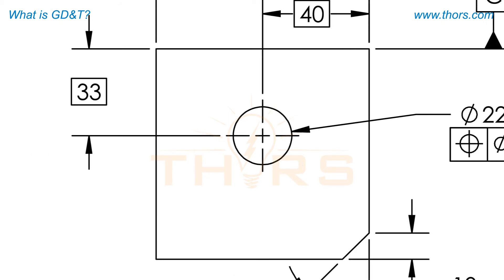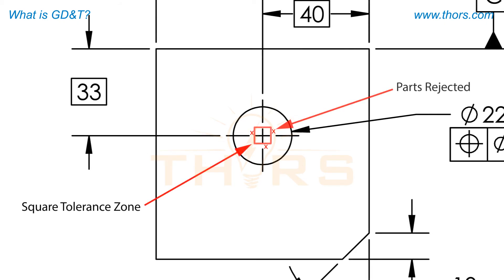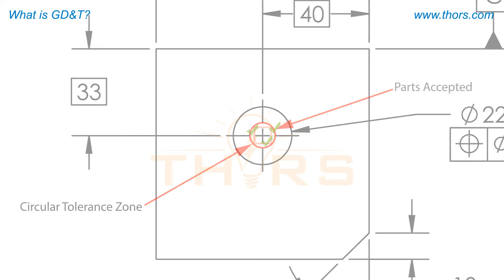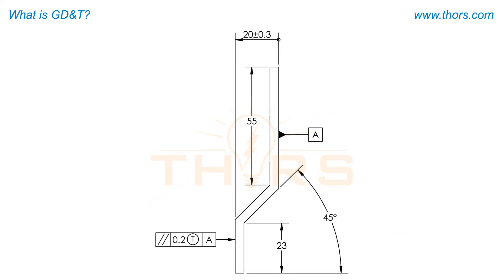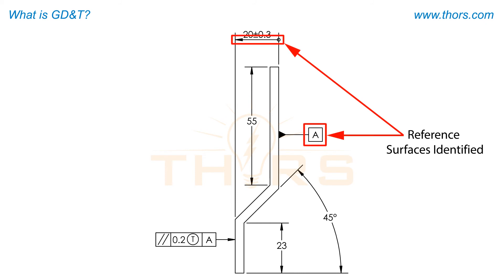GD&T eliminates these issues in the following ways. It provides a circular tolerance zone rather than a square or rectangular one. It adds clarity to drawings by clearly defining the location and orientation of features by identifying reference surfaces.